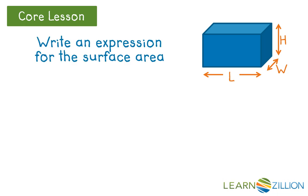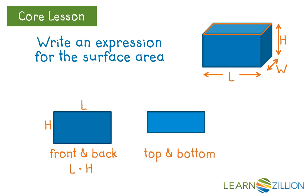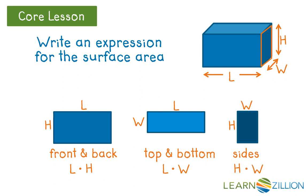Now we'll look at the area of each of the rectangular surfaces on the prism. In terms of l, w, and h, the front and the back have dimensions h by l, giving an area of l times h. The top and bottom have dimensions w by l, giving an area of l times w. And the sides have dimensions h by w, giving an area of h times w.